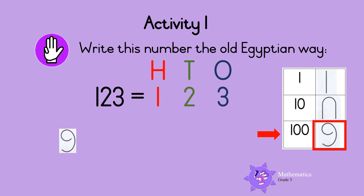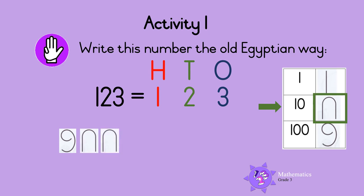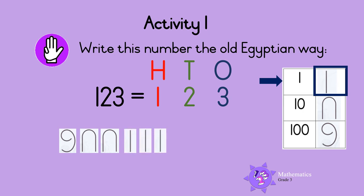We still need two tens and three ones. This is the symbol used for tens. Two tens make 20, so we need two of these symbols: one, two. These three symbols together give us the number 120. We still need three ones. Here is the symbol for one — there are three ones, so we need three of these symbols: one, two, three. This is how you write 123 in old Egyptian. Well done!